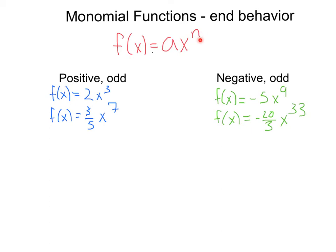Now let's take a look at when our exponent is odd. For example, if we have a positive a and an odd exponent n, like 2x³ or ⅗x⁷, these end behaviors are going to be different, and what's going to happen in this case is the left side is going to be coming from negative infinity, and the right side is going to be going to positive infinity.